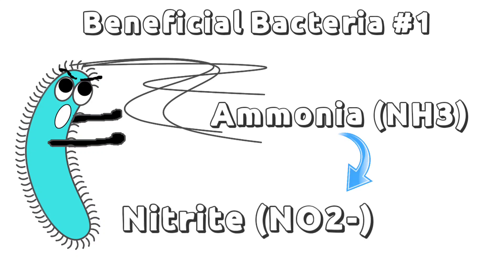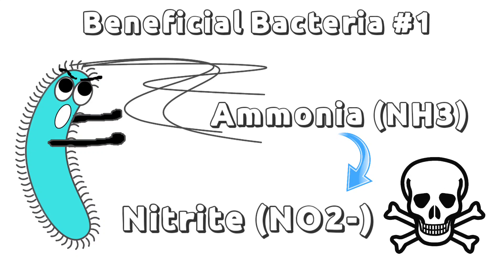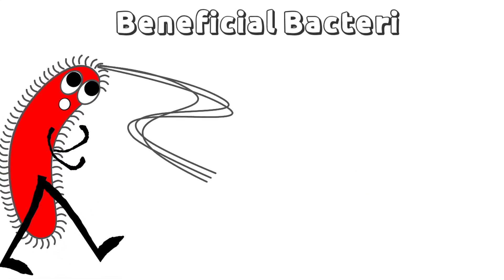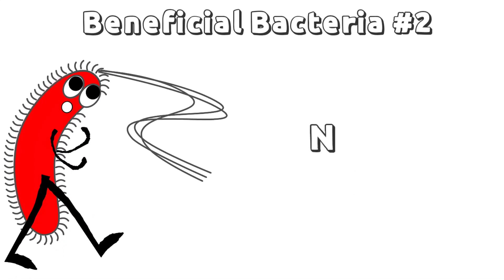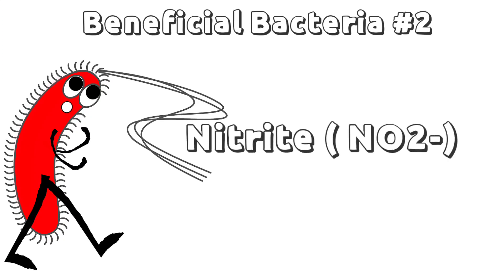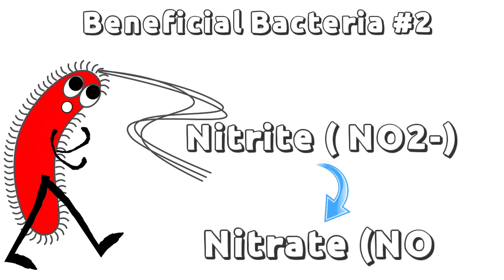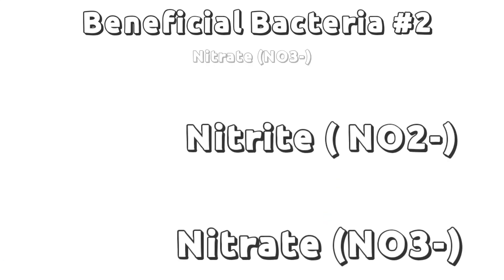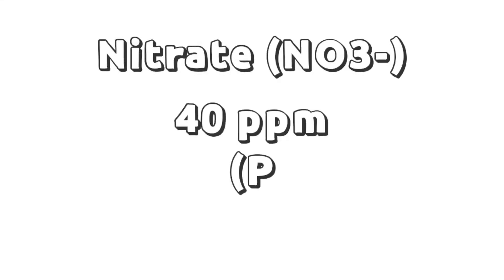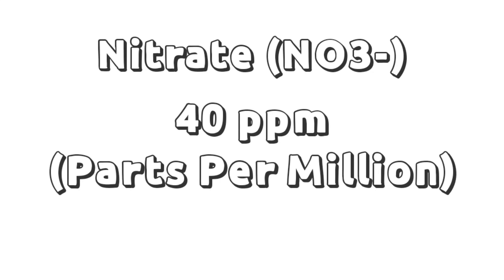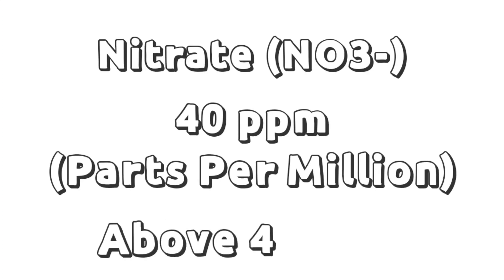However, nitrite is still toxic to our fish. That is why we need the help of beneficial bacteria number two to oxidize the nitrite and convert it into nitrate. Nitrate is safe for our fish compared to ammonia and nitrite, as long as it does not exceed the 40 parts per million threshold.